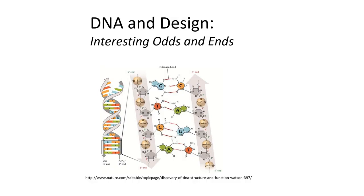Those riboses are in turn linked to heterocyclic bases — the purines and the pyrimidines. There are four bases. Guanine, which links to cytosine: guanine has two rings, cytosine has one, and they link together with three hydrogen bonds. Adenine, which links to thymine: adenine has two rings, thymine has one, and they link together with two hydrogen bonds. You can see all of that on this diagram.